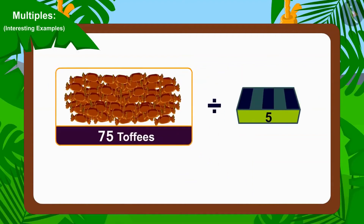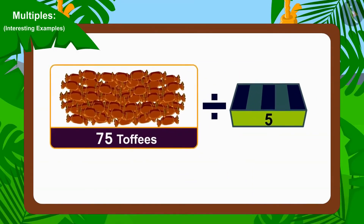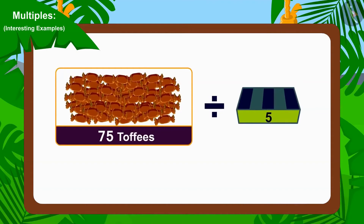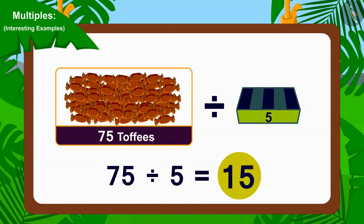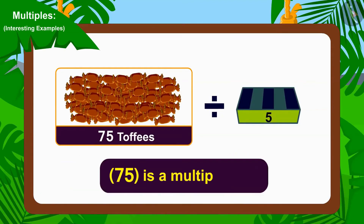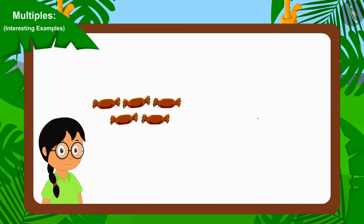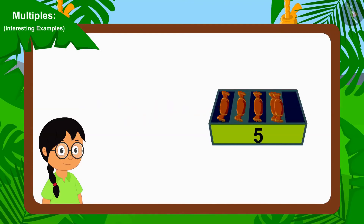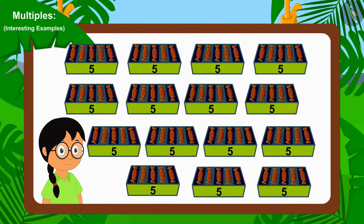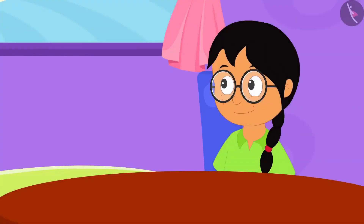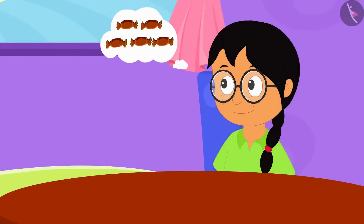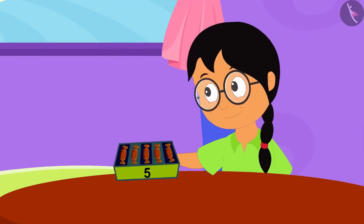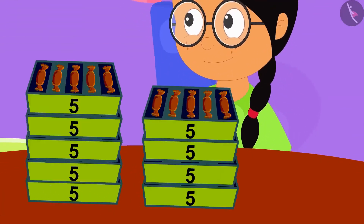Children, you have found the answer absolutely correctly! We can divide 75 by 5. In other words, 75 is a multiple of 5. Therefore, by forming a group of 5 toffees, Meenu can divide these toffees equally among her friends. With the help of your answer, Meenu made 15 groups of chocolate candies and filled 15 boxes.